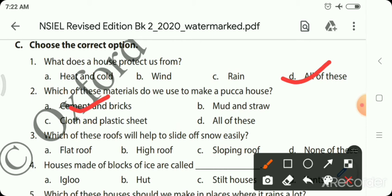Which of these roofs will help to slide off snow easily? The snow should slide off the roof easily - flat roof, high roof, or sloping roof? Sloping roof, right. Houses made of blocks of ice are called igloos.